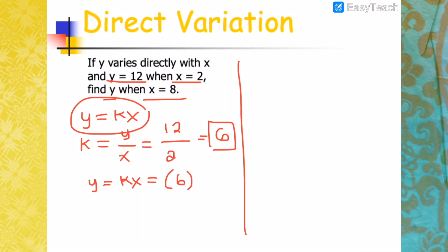And then going back to the original formula, you will have Y equals KX. Substituting K, which is 6, multiplied by 8. So 6 times 8, you'll get 48. Therefore, this is the value of Y when X is 8.